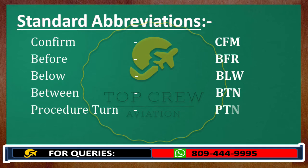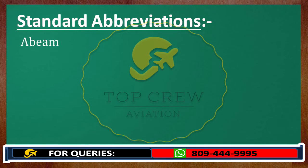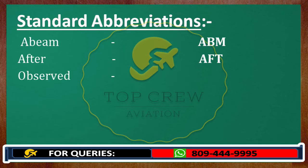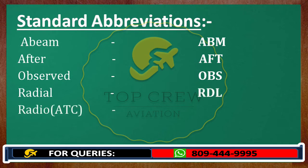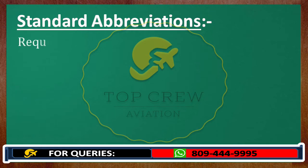Report Reaching — RR. Abeam — ABM. After — AFT. Observed — OBS. Radial — RDL. Radio — RDO. Report — REP. Request — REQ.